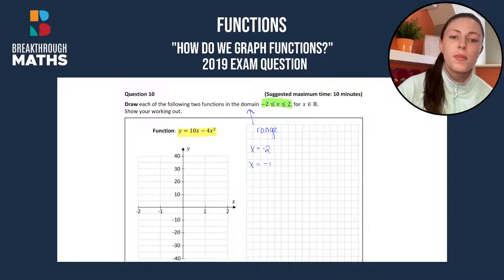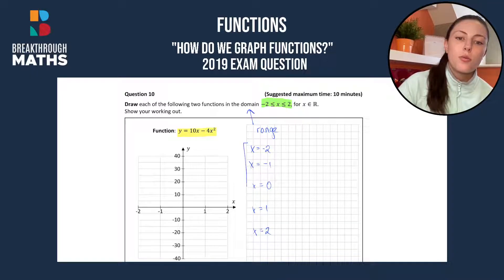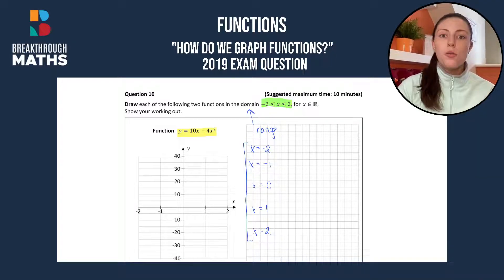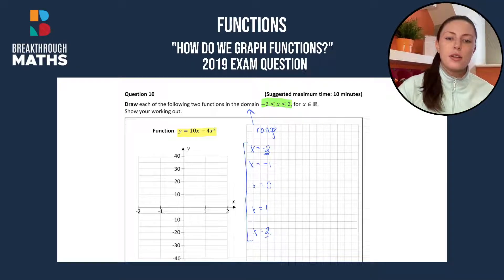We have x could be minus 2, x could be minus 1, x could be 0, x could be 1 and x could be 2. So that's the domain there that's listed. Minus 2 inclusive all the way up to 2 which is also included, because x is greater than or equal to minus 2 and it's less than or equal to 2. That's why those two values are included at either end.